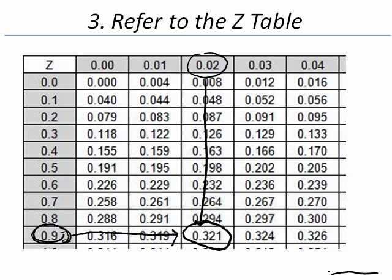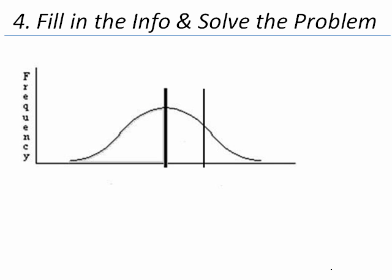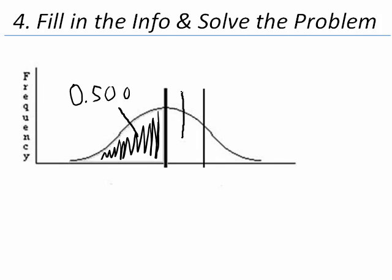So it's telling us that for a normal distribution, the area between the mean and z is 0.321. Our last step is to solve the problem. We already know from before that half the population is below the mean. We've also learned by looking at the z table that 0.321 of the population is between the mean and the z score. Our mean was 70 and our value is 81.